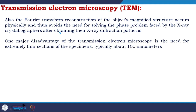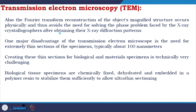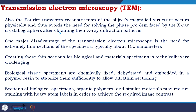One major disadvantage of TEM is the need for extremely thin sectioning of the specimen, typically about 100 nanometers — this is technically very challenging. Biological tissue specimens are chemically fixed, dehydrated, and embedded in a polymer resin to stabilize them sufficiently to allow ultra-thin sectioning. Sections of biological specimens may also require staining with heavy atom labels to achieve the required image contrast.